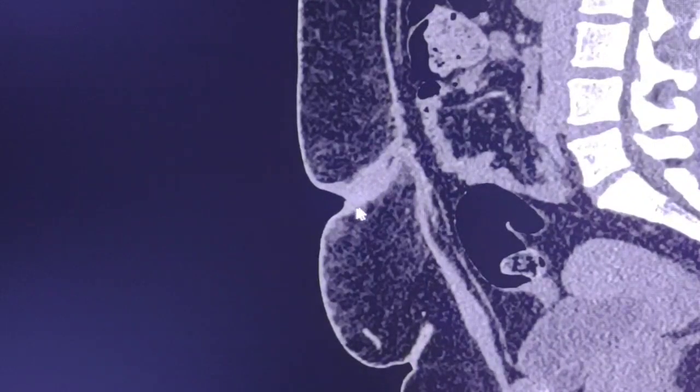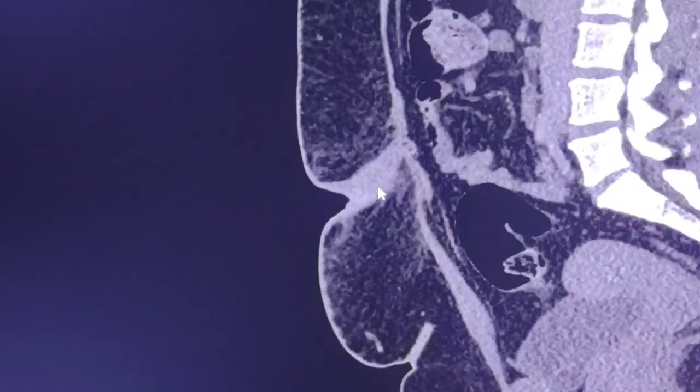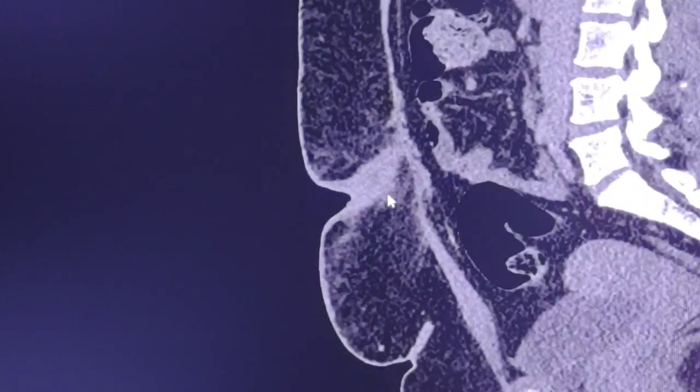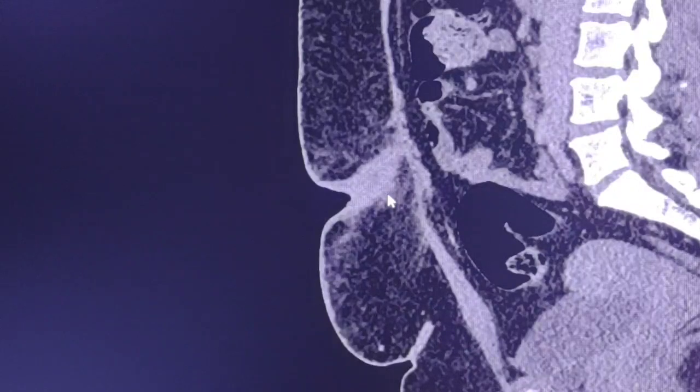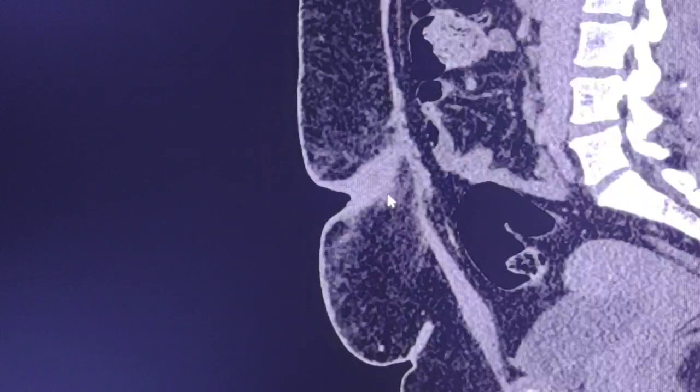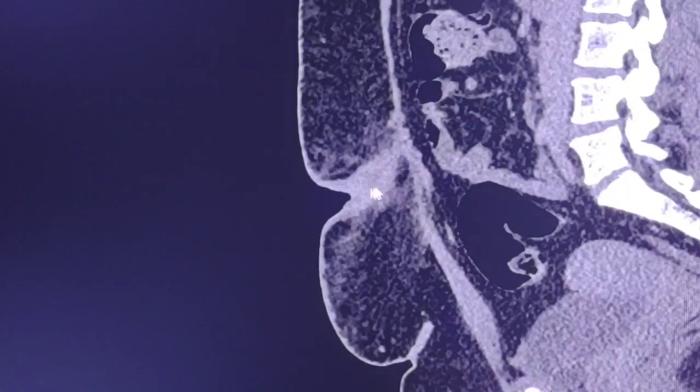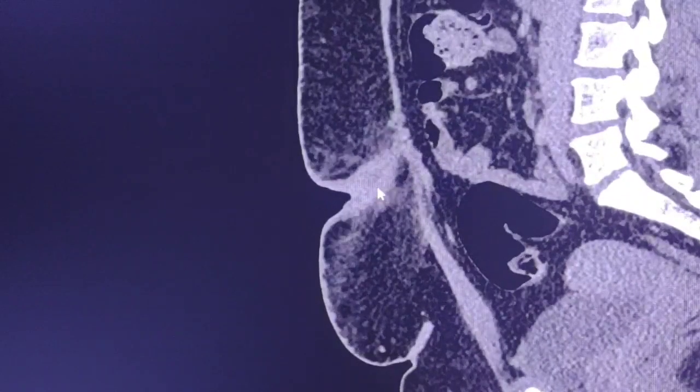Infection around the umbilical area. The term omphalitis comes from the Greek word omphalos which means umbilicus. So there is inflammation around the umbilicus. This is omphalitis.